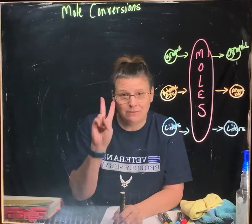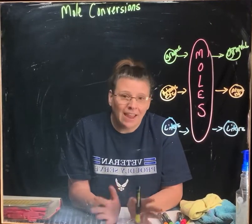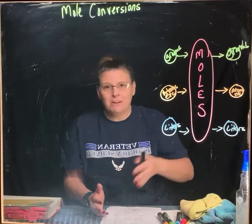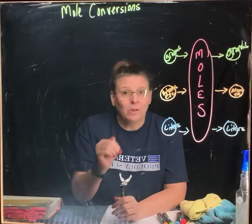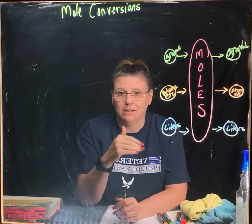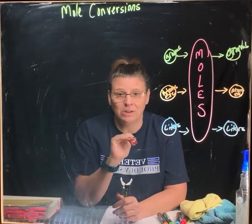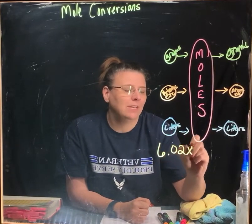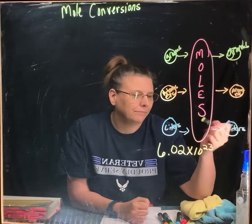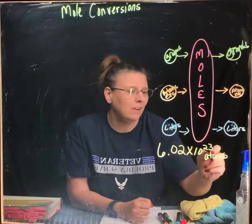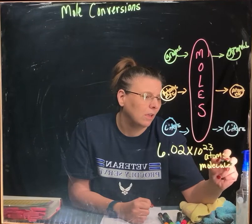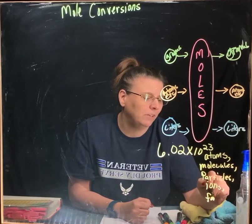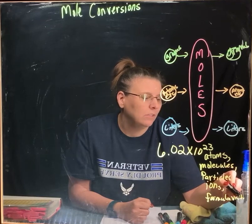If I said I had a pair of shoes, you would say you have two shoes. So it's a counting unit. Don't get confused with the word mole — it's just a counting unit, just like inches. There's 12 inches in a foot. Just know that one mole of a substance in chemistry is equal to 6.02 times 10 to the 23rd molecules or atoms of that substance. Write that down: 6.02 times 10 to the 23rd atoms, molecules — it can also be particles, ions, formula units, and so on.